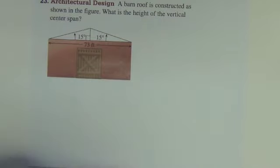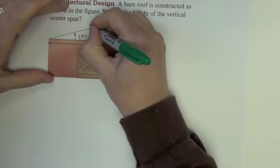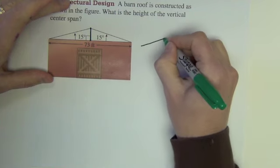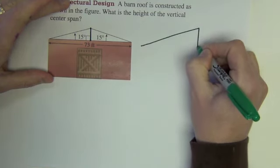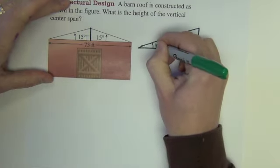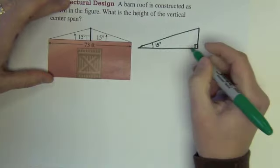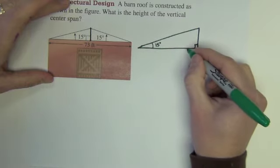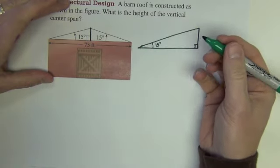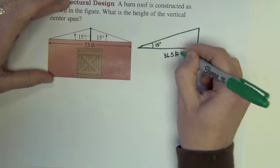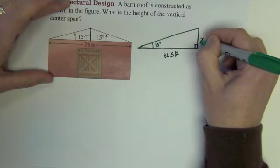This next example. A barn roof is constructed as shown in the figure. What is the height of the vertical center span? So we're after that right there. And let's just pull out one half of that roof. That's 15 degrees. If the entire thing is 73 all the way across, this is 73 halves, which if you want to use a decimal you could say it's 36.5 feet.